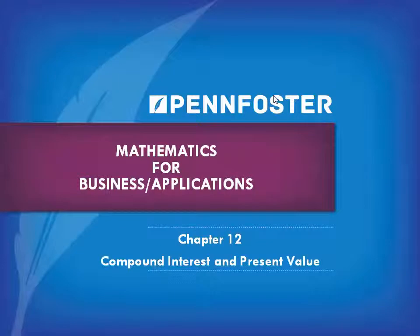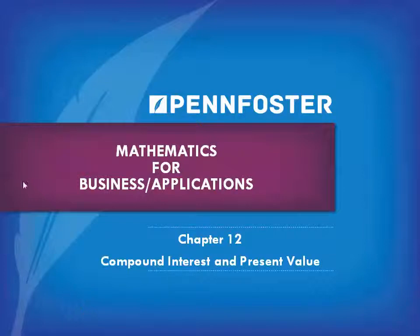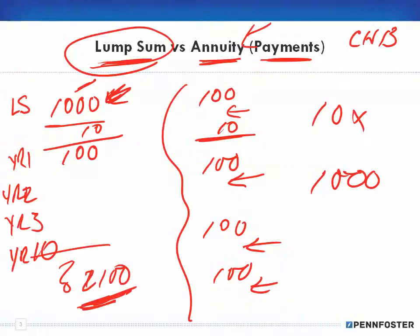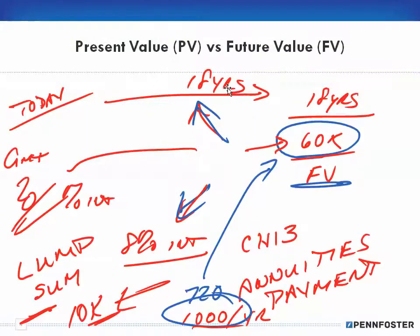Welcome back, students taking Math for Business and Finance Math Applications. We're going over the theory for chapter 12, compound interest and present value. This will take three possibly four videos. In the previous videos we talked about simple interest versus compound interest, and lump sum versus annuity — annuity being payments, which will be covered in chapter 13.